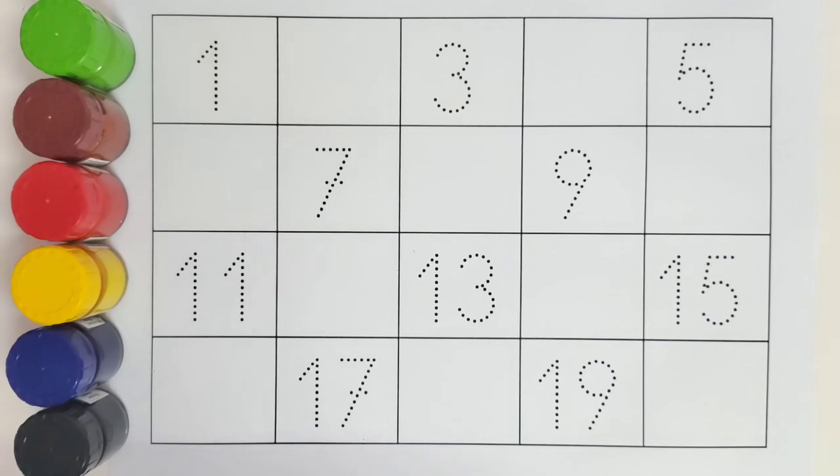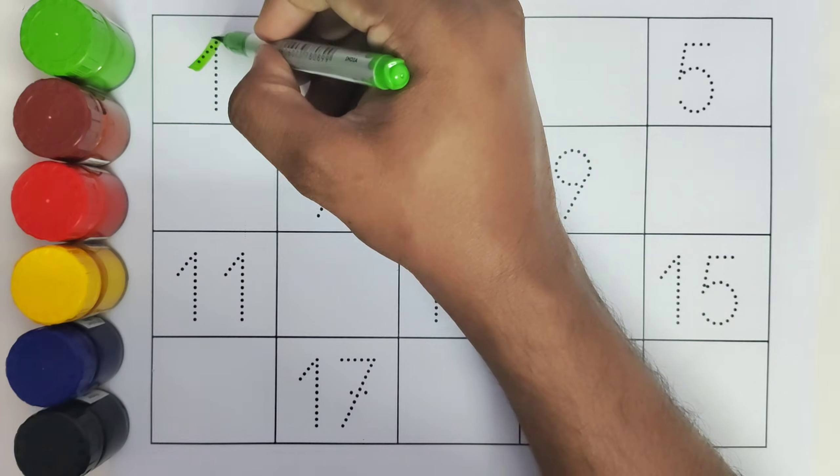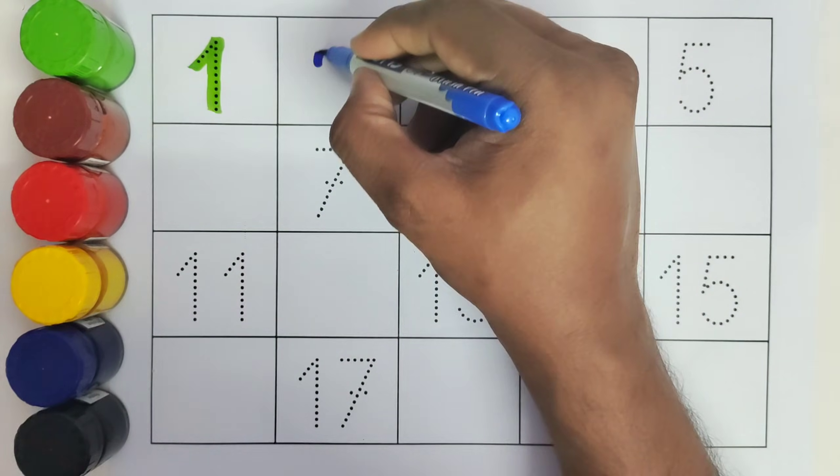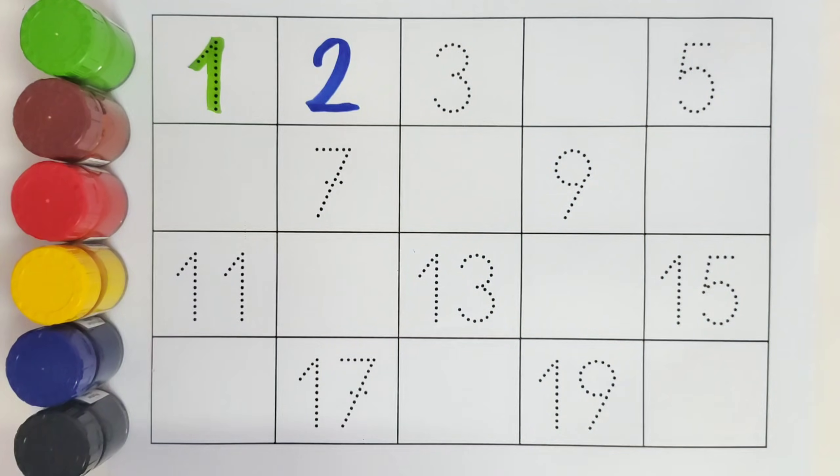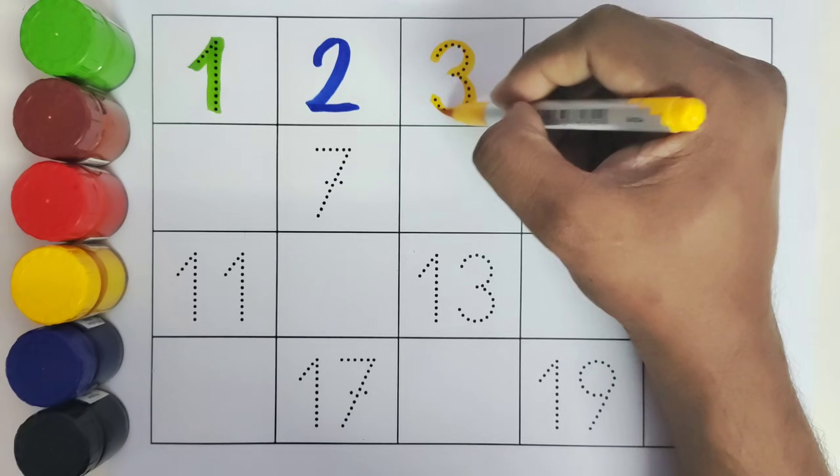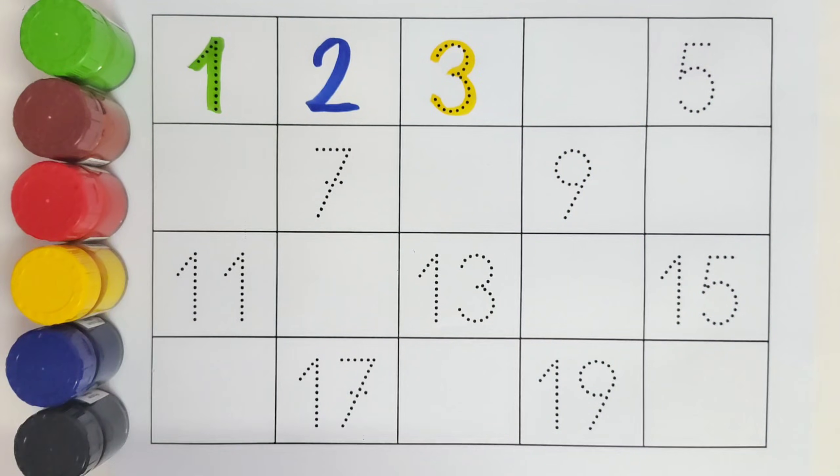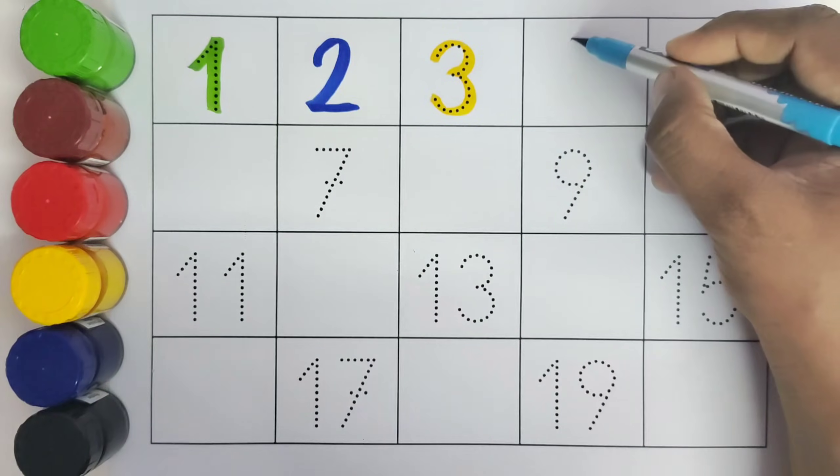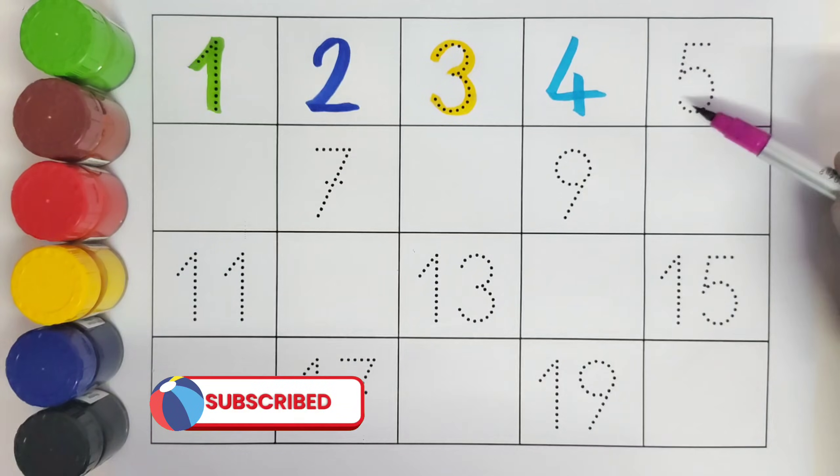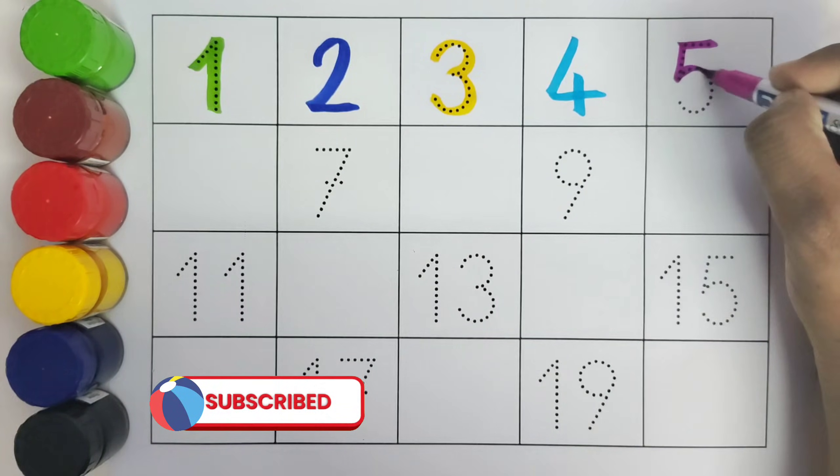Let us get started. This is 1. What comes after 1? 2. Number 2. This is 3. Number 3. What comes after number 3? 4. Number 4. This is 5. Number 5.